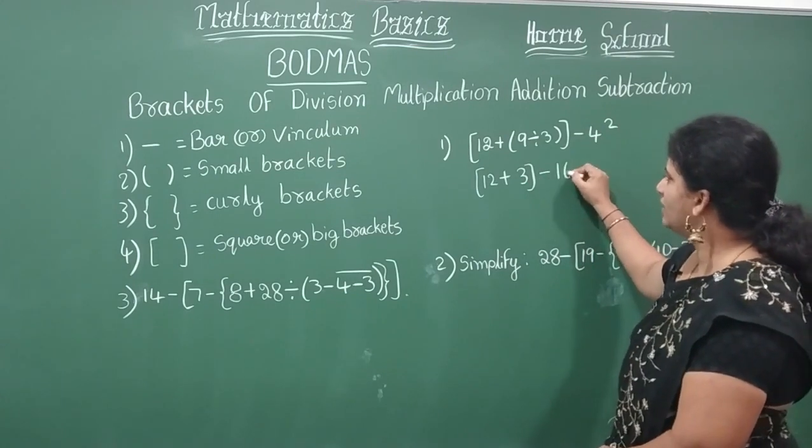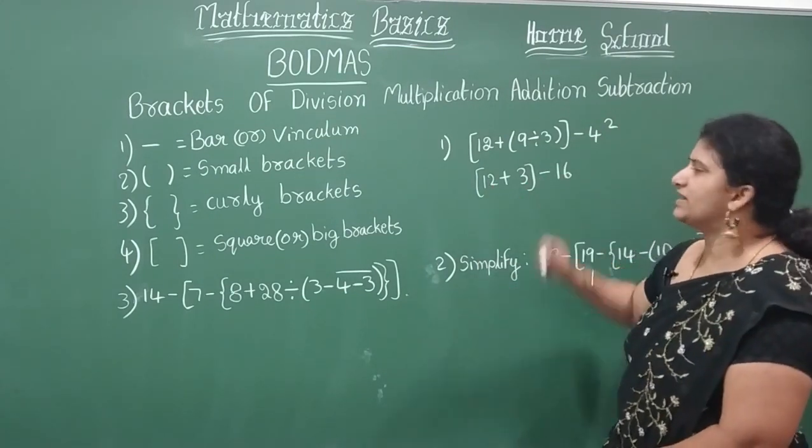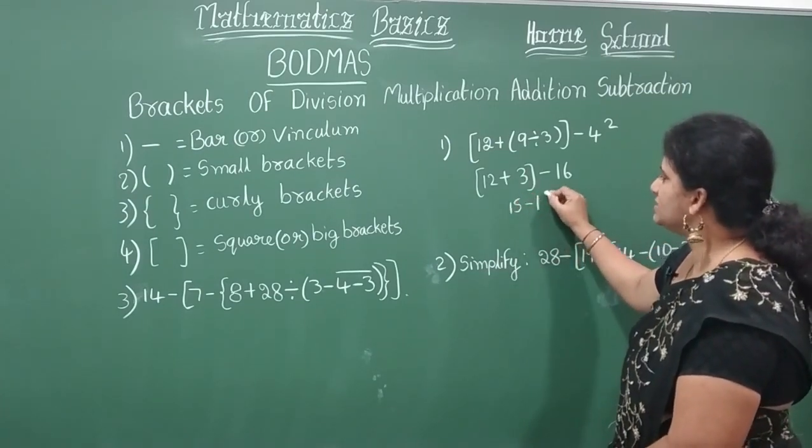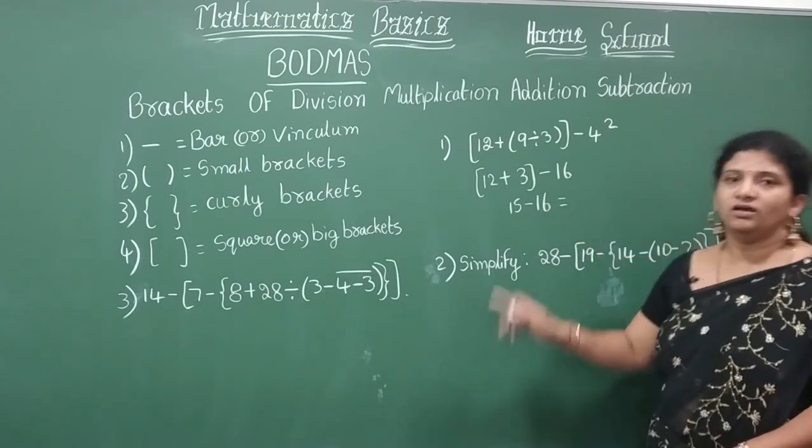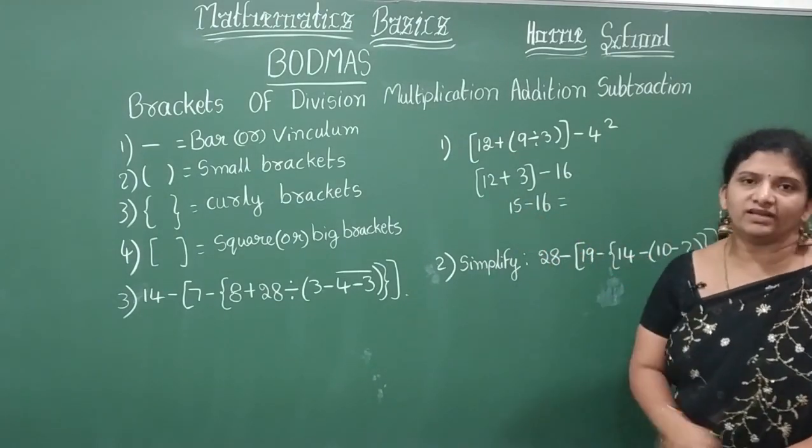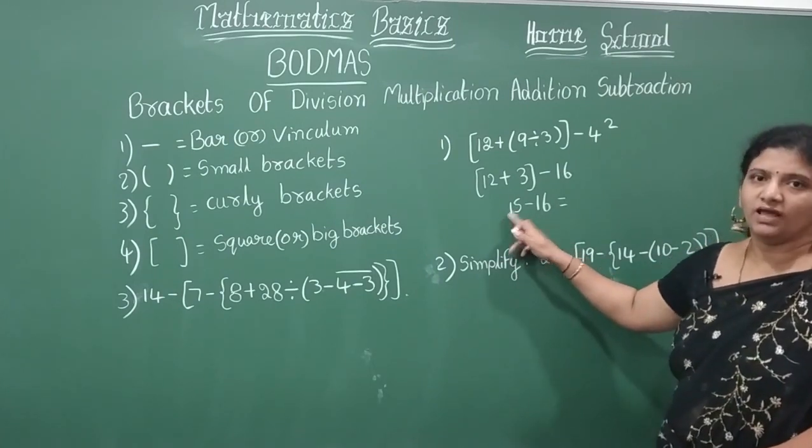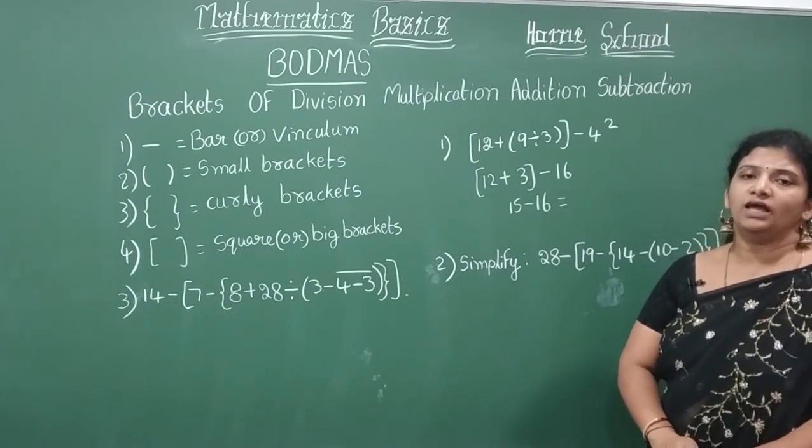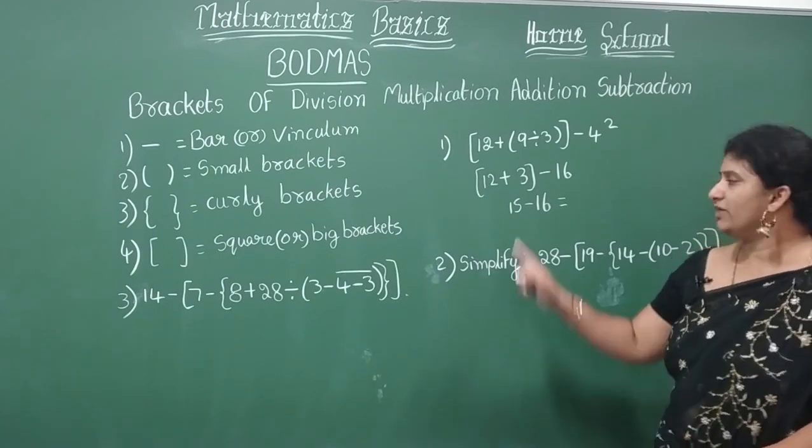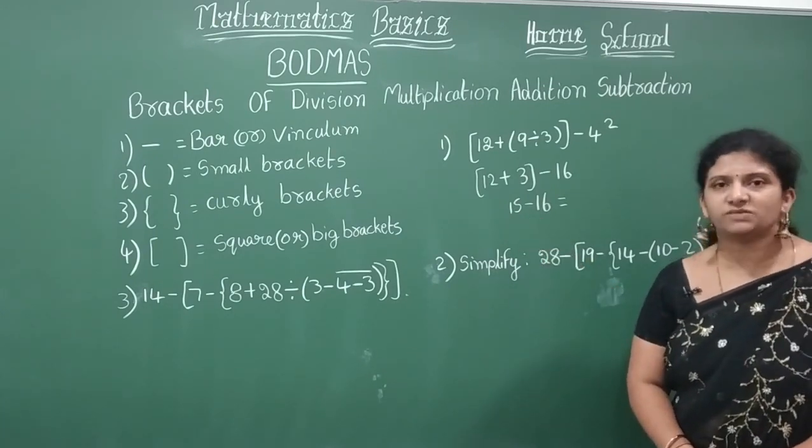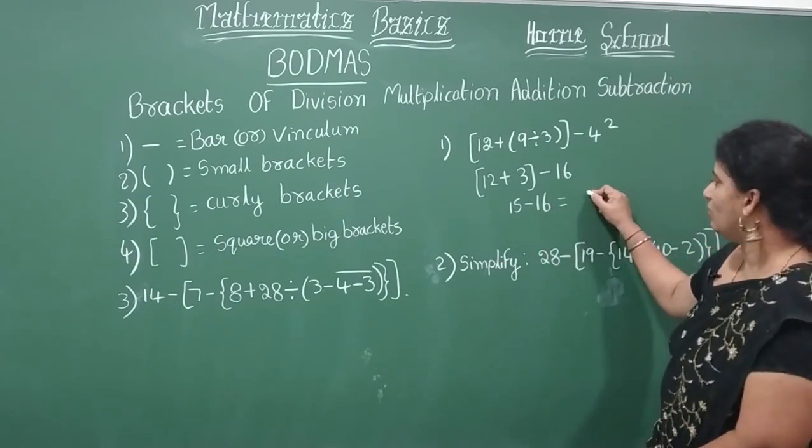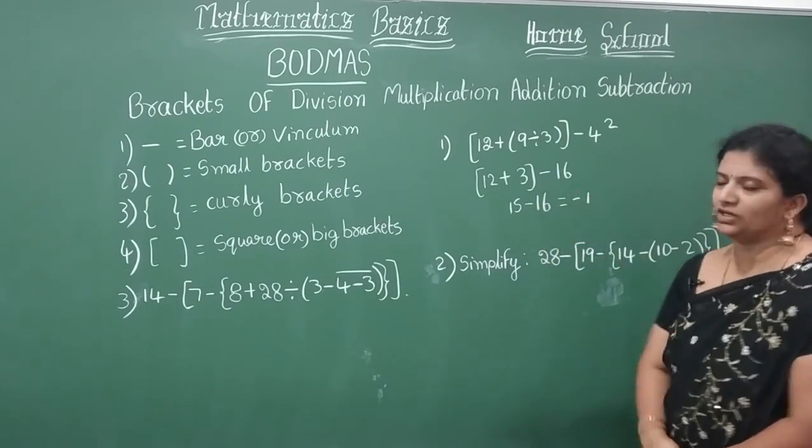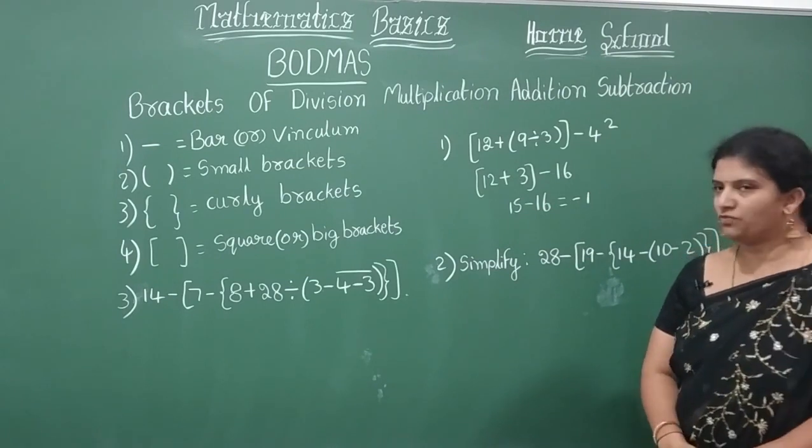So I will take as it is 12 plus 9 divided by 3 will be 3, square bracket, these brackets will be vanished, minus 4. 4 square is 16. Then what is 12 plus 3? It will be 15 minus 16. Both are with two different signs, one positive and another negative. If both having different signs, first you subtract. 16 minus 15 will be 1, and take the sign of the greatest number, negative. That is your answer.